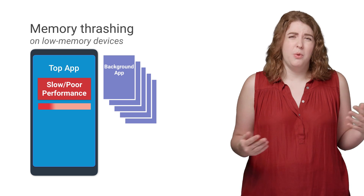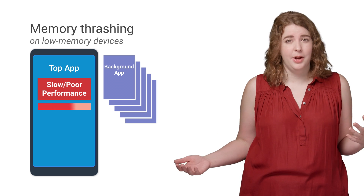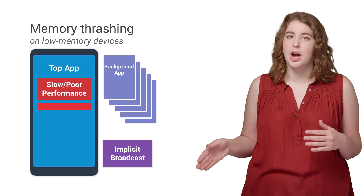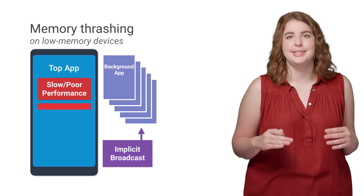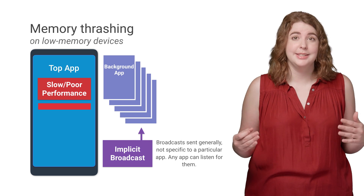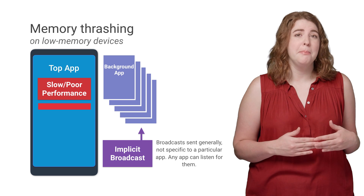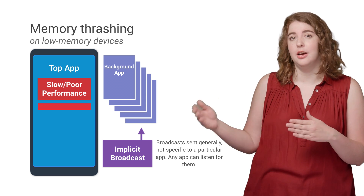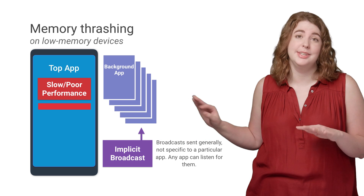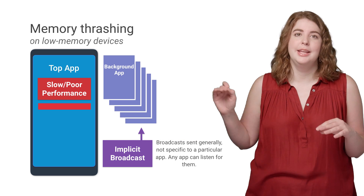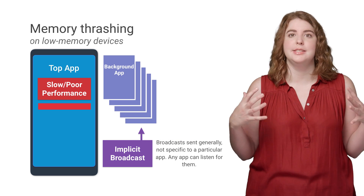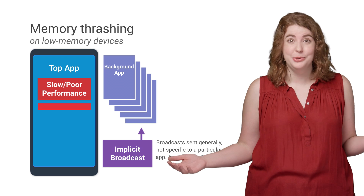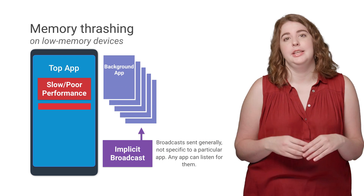So why do so many background services trigger at once? Often, it is in response to an implicit broadcast. An implicit broadcast is a trigger that declares an event instead of calling a specific app, meaning that the reasonable use case of passing some data along to another app to do a task for you is lost. Instead, we have the madness of a single app standing up and shouting that it just did something cool — who wants to come see?